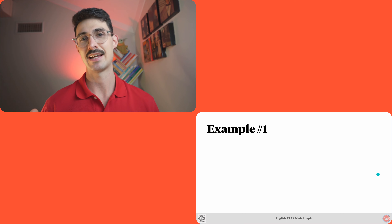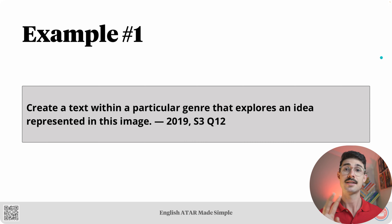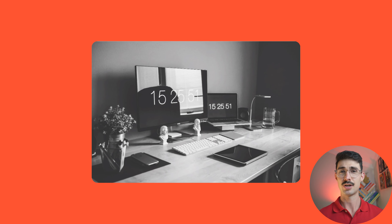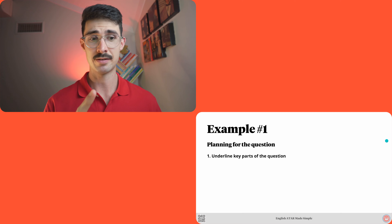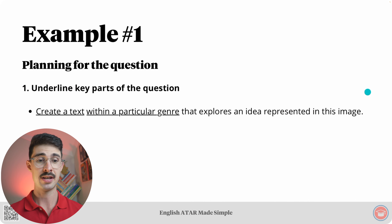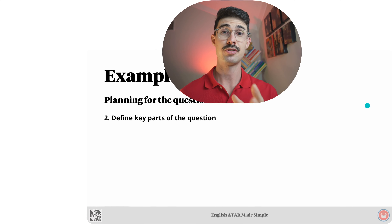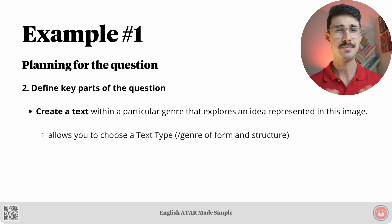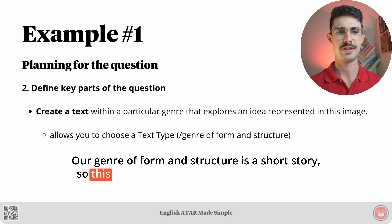Starting with example one. The question is: create a text within a particular genre that explores an idea represented in this image — originally used in the 2019 WACE exam. Step one, underline key parts: 'create a text,' 'within a particular genre,' 'explores,' 'an idea,' and 'represented.' Step two, define those key parts: 'create a text' means you can choose your genre of form and structure; 'within a particular genre' allows you to select a genre of form/structure and/or subject matter; synonyms for 'explores' include investigates, considers, examines. 'An idea' means a specific comment a text makes about a concept, theme, or issue — and because it's singular, one idea should be showcased. 'Represented' can be understood as re-presented.